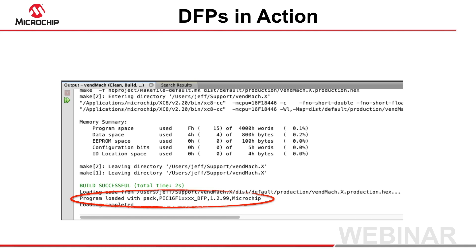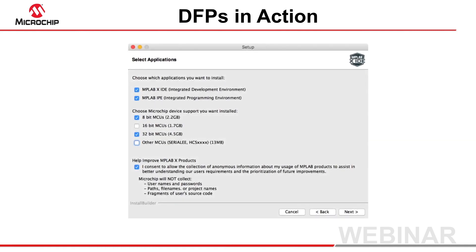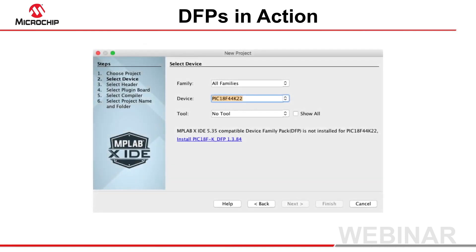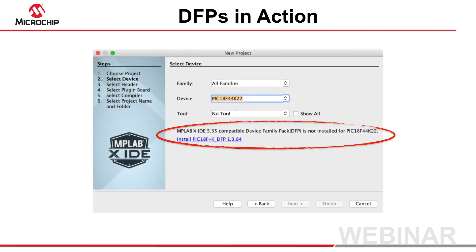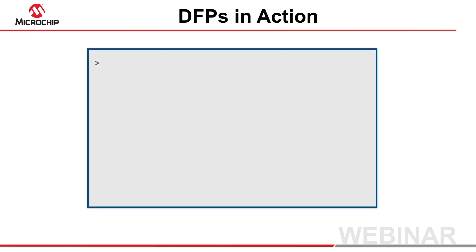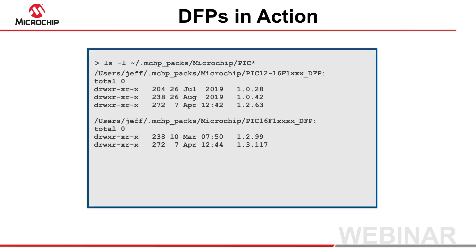During the IDE's installation, only those DFPs relating to device families you require need to be installed. To save disk space and speed the installation process, you might install no device support at all. When you create a new project for a device with no available DFP, you will be prompted to download the relevant pack for just that device family. DFPs that are individually downloaded are stored separately to the IDE in your user directory, where they can be used by all IDE installations.